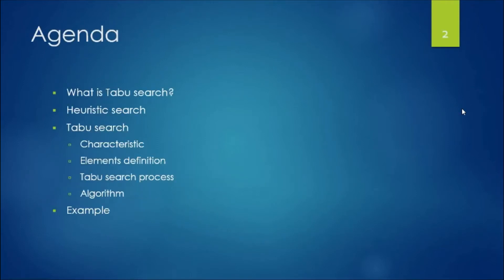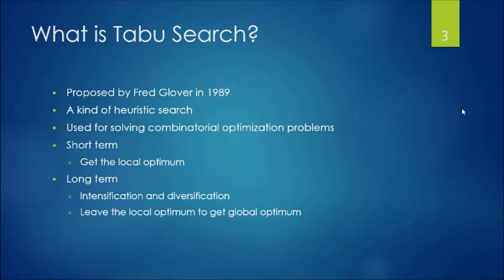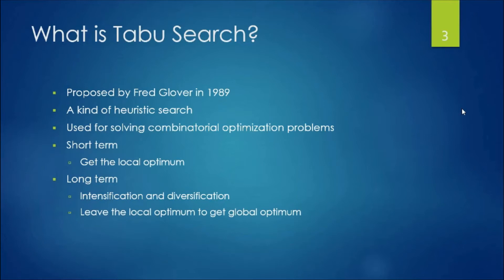Tabu Search was introduced by Fred Glover in 1989. It is a heuristic search — not a natural evolution type of search — and it is mainly used for solving combinatorial optimization problems as well as hard problems that take more than a reasonable time to solve. In the short term, running Tabu Search gives a local optimum.